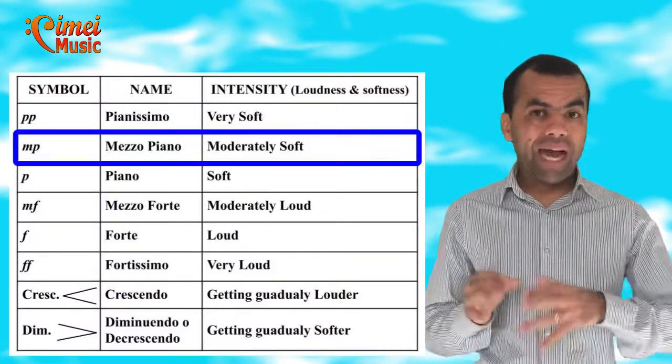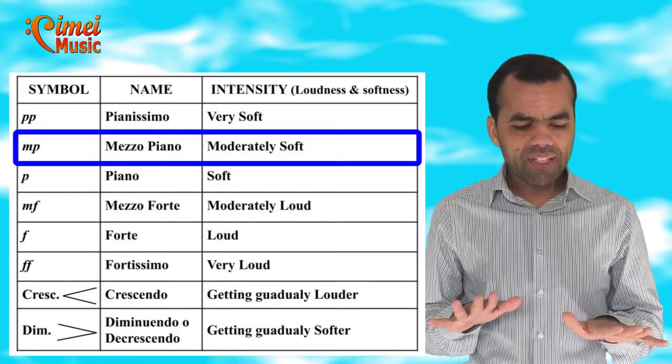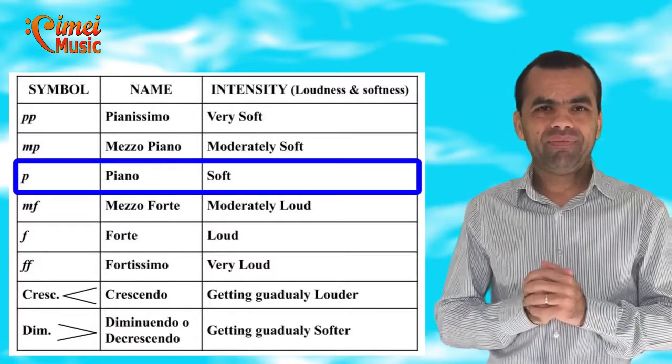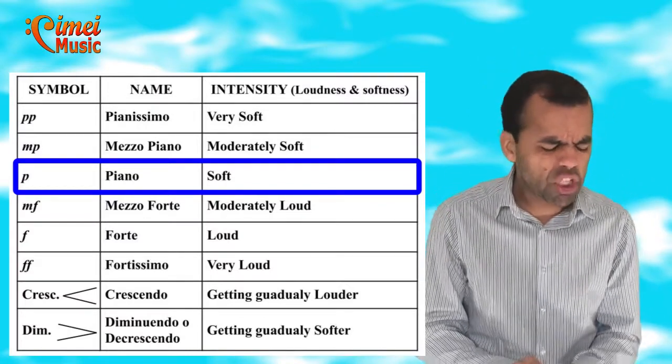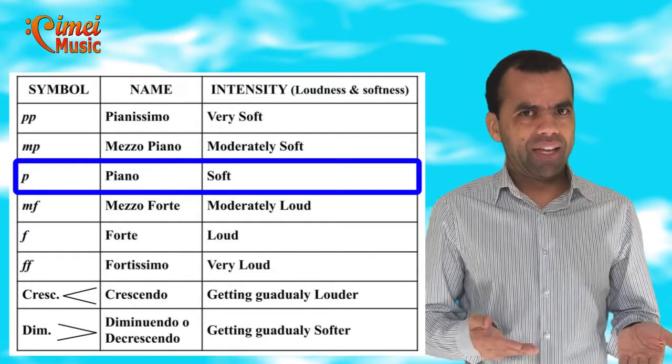And then we're going to have mezzo piano — that is MP — which means moderately soft. And then we're going to put the volume a bit higher. We're going to get to piano. It's not as soft as pianissimo, but it's a bit higher. We're putting the volume of the music into a good stage.